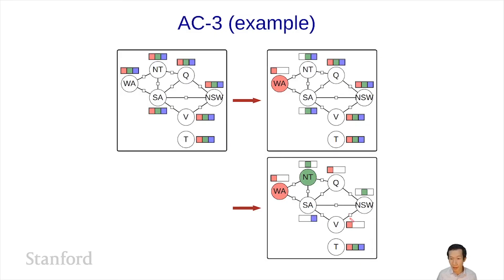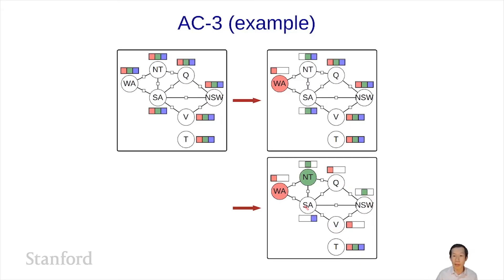Notice what happened: each of these domains is only left with one value. Even though we're still in the context of backtracking search at NT and still figuring out what to do with NT, by looking ahead we've seen what values are even possible and essentially solved the problem. We haven't formally set these values yet — we just eliminated their domains. But backtracking search recursing on the rest should be a walk in the park. You go into SA and set it to blue, set Q to red, WA to green, and V to red, and you're done.